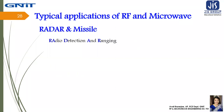What is radar? The word radar stands for Radio Detection And Ranging. Radar is a detection system that uses radio waves to determine the range, angle, or velocity of an object. It can be used to detect aircraft, ships, spacecraft, guided missiles, motor vehicles, weather formations, and terrain.